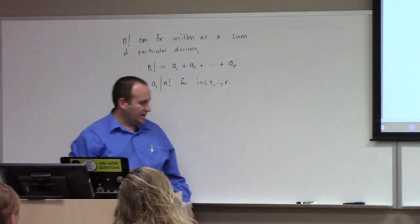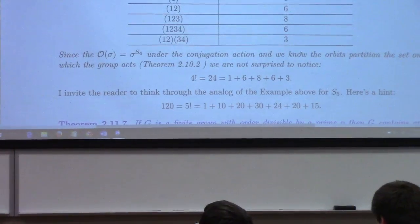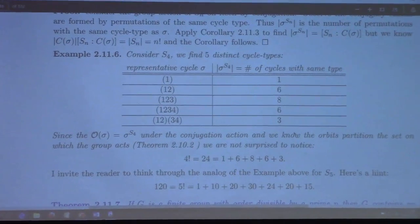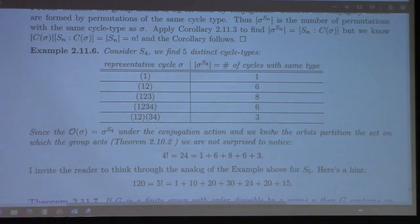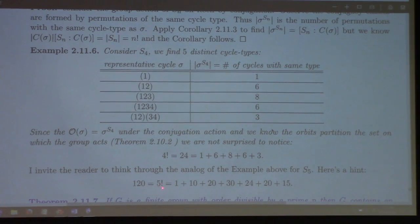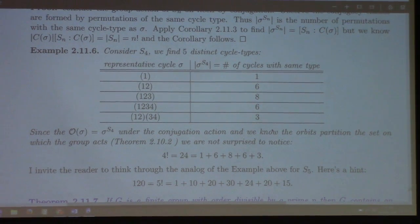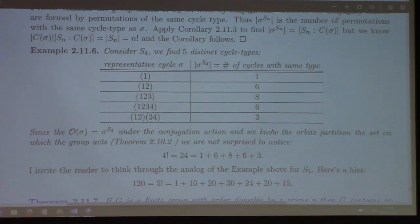For your homework, I will ask you to do this example but for S5. This is one of those homeworks that's due on the question day, so I try not to be too mean. Here's part of me not being mean: 120 — you might notice it's 1 + 10 + 20 + 30 + 24 + 20 + 15. Those are interesting numbers. There's a particularly generous hint for that homework problem.